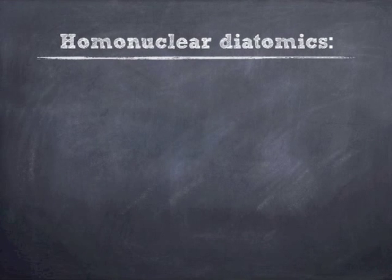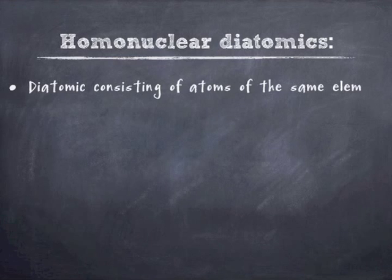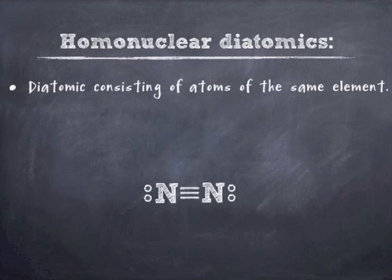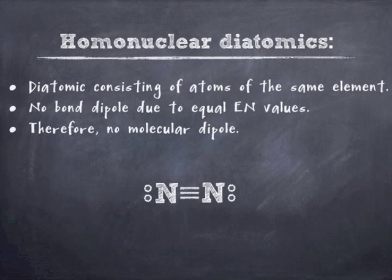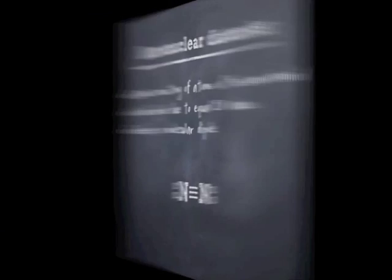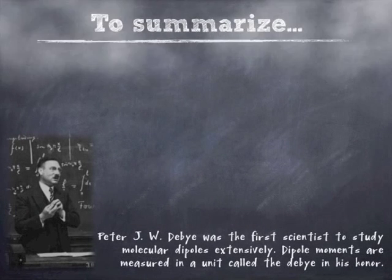And I should throw in, too, the idea of homonuclear diatomics. Again, elemental diatomics. Obviously, if you have two atoms of the same element bound together, they're going to have charge symmetry. You're going to have equal electronegativity values, so you're going to have a zero electronegativity difference.